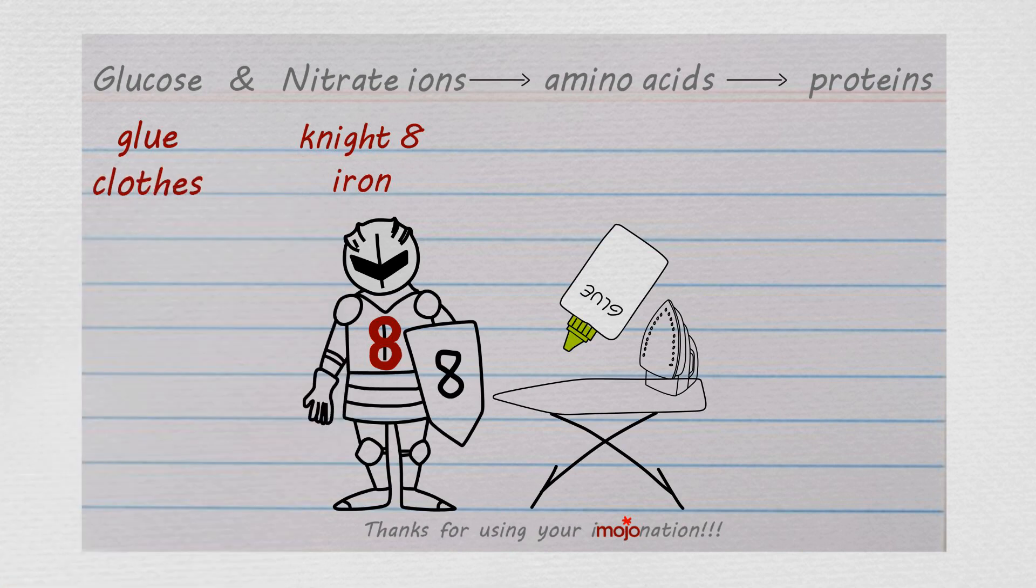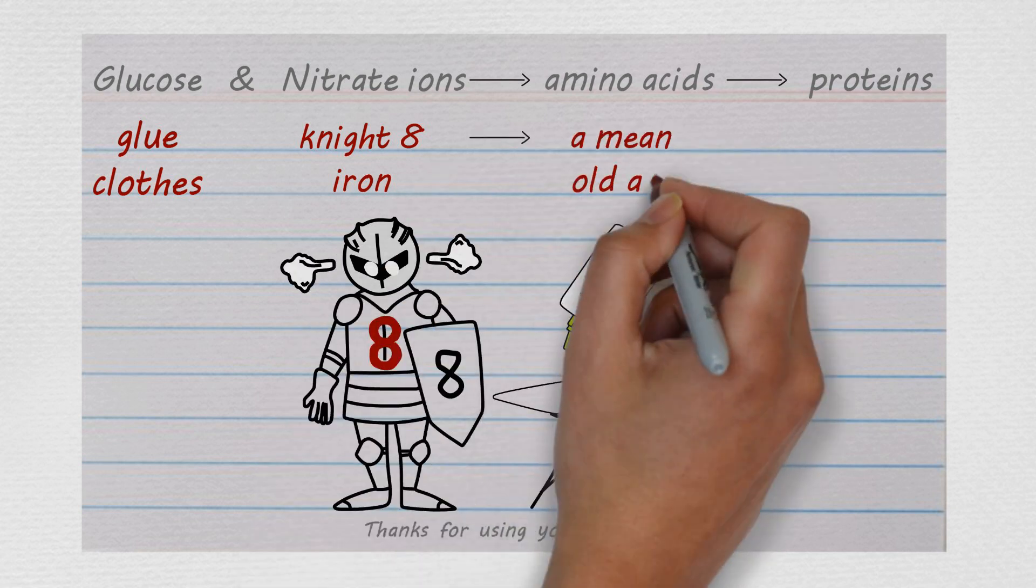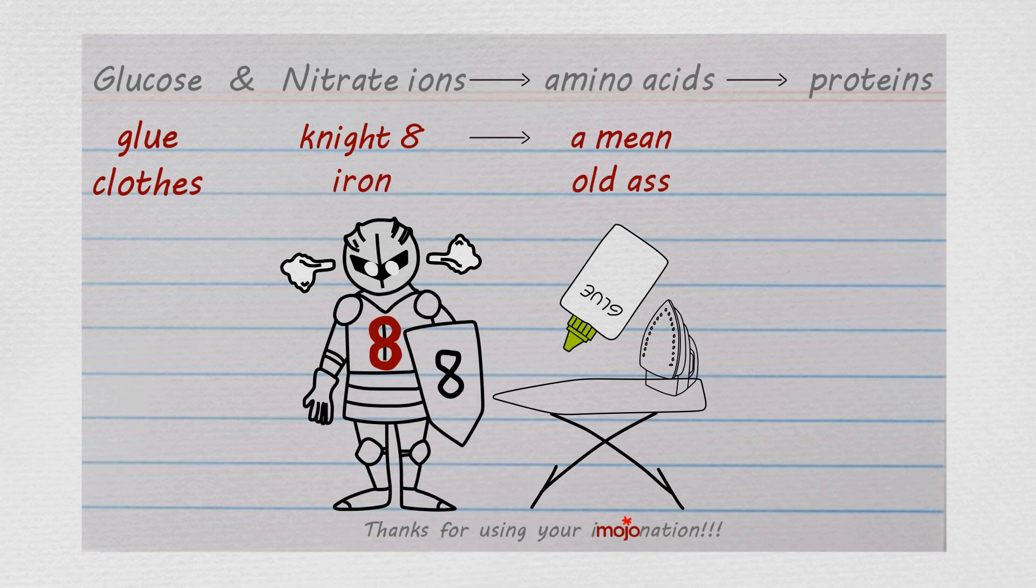What do you think his reaction would be to glue on his clothes? Angry, of course. He'd turn into a mean old knight, a mean old ass you could say, like amino acid. So nitrate iron and glue clothes turns into a mean old ass. Nitrate ions and glucose turn into amino acids.